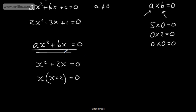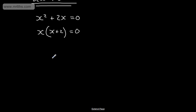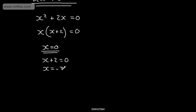When we have a quadratic like this, we set one side equal to 0 and factor the other side. This tells us that either x is equal to 0, or x plus 2 is equal to 0. Subtracting 2 from both sides gives x is equal to minus 2. So we end up with two solutions: x is equal to 0, or x is equal to minus 2. All I've done is factored that equation.